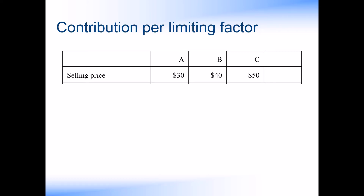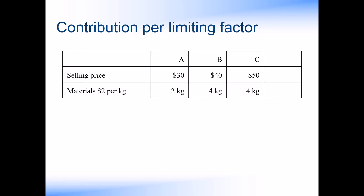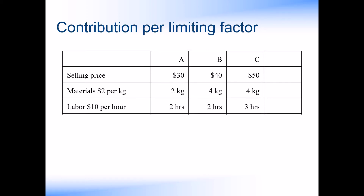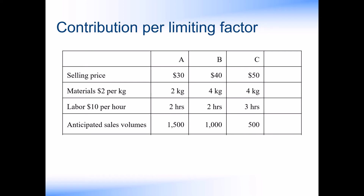The relevant data we would require to calculate the contribution per limiting factor is as follows: the selling price for each product, the cost and amount of materials used on each product, the rate per labour hour and the number of hours required per product, and the anticipated sales volumes per product.